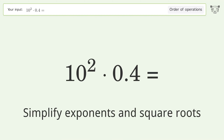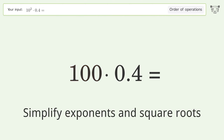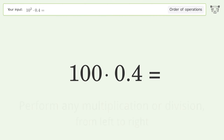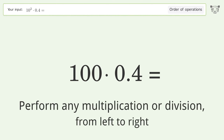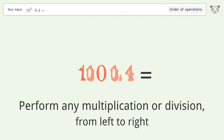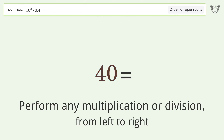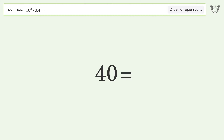First, simplify exponents and square roots: 10 to the power of 2 equals 100. Then perform multiplication or division from left to right: 100 times 0.4 equals 40. And so the final result is 40.